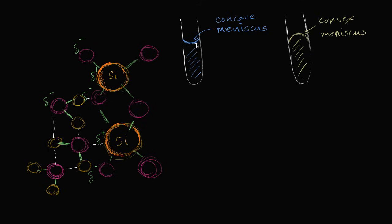And you might be saying, wait, hold on a second here. We've been talking about how water has its polarity — it has a partial negative end, and each water molecule has a partially negative end and partially positive ends at the hydrogens. That causes hydrogen bonding to form in water, and that's what gives water all of these special properties. You're telling me that it's more attracted to the glass than it is to itself?